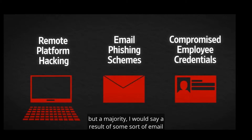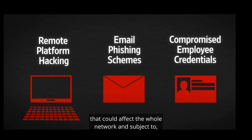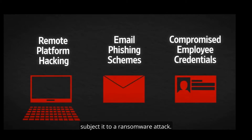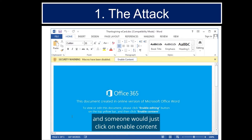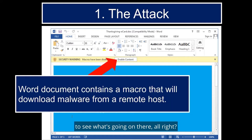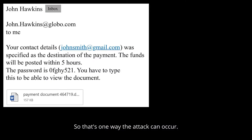Ransomware typically results from an email with an attachment or a link that downloads malware to a computer, potentially affecting the whole network. Some of those emails may look something like this — a document sent through Office where someone would click 'Enable Content' to see what's going on, and it contains malware that downloads from a remote host if you click on it. That's one way the attack can occur.